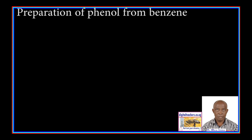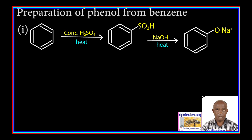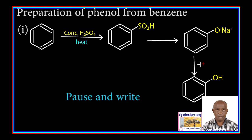Phenol — preparation of phenol from benzene. Method 1: Benzene reacts with hot concentrated sulfuric acid to form benzene sulfonic acid. Benzene sulfonic acid is fused with sodium hydroxide to form sodium phenoxide. Sodium phenoxide is hydrolyzed by an acid to form phenol.